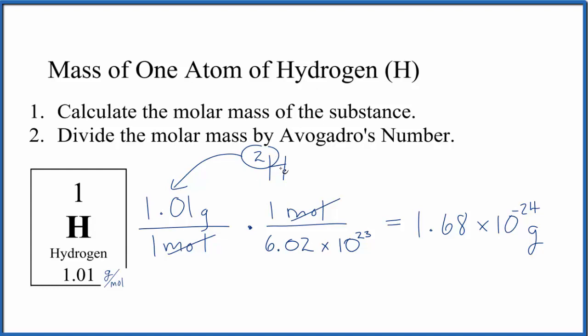And that gives you the mass of one atom of the deuterium isotope. You could do the same for tritium where you'd have a mass number of 3.